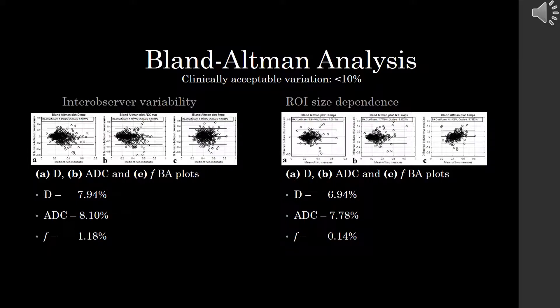When we looked at measurement variance using Bland-Altman analysis, we used the clinically acceptable variation threshold of less than 10%. We found that inter-observer variability and ROI size dependence in all images was within clinically acceptable variability.